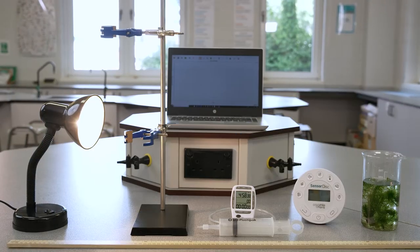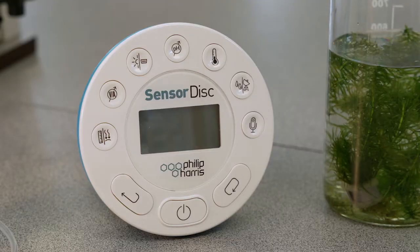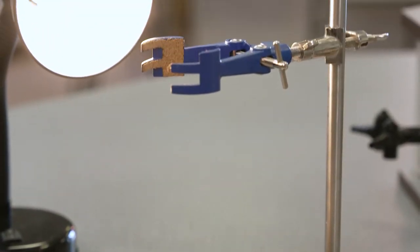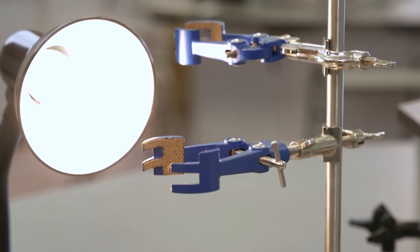To complete this experiment you'll need a data logger with an air pressure sensor such as sensor disk, a retort stand rod and base, plus some clamps to hold the sensor disk and the syringe.